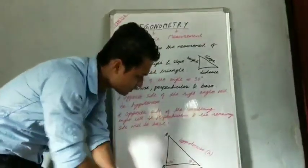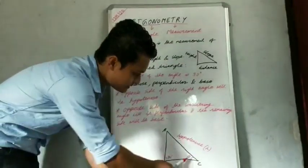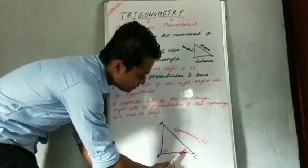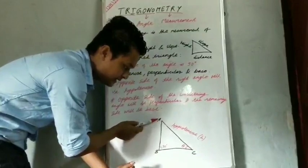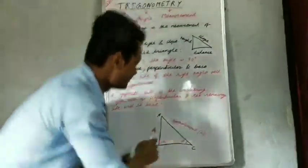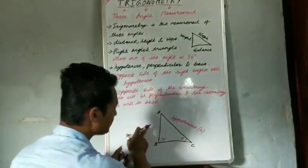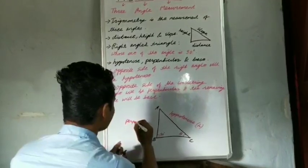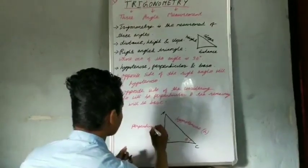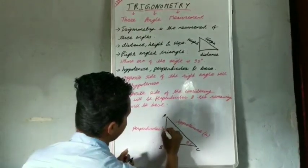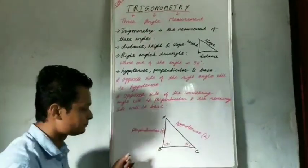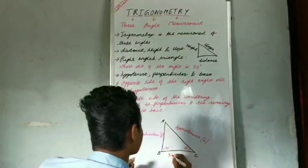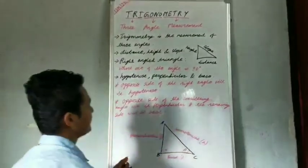Look at this figure. Our considering angle is angle ACB, that is angle theta. The side opposite to this angle theta is side AB. That means side AB is the perpendicular with respect to angle theta — represented by small letter P. The remaining side BC will be the base — represented by small letter B.